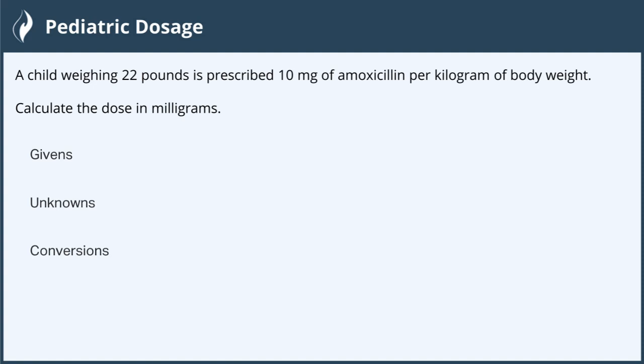A child weighing 22 pounds is prescribed 10 milligrams of amoxicillin per kilogram of body weight. We want to calculate the dose in milligrams.